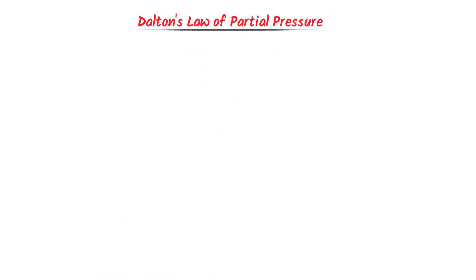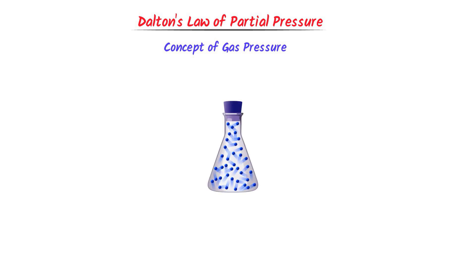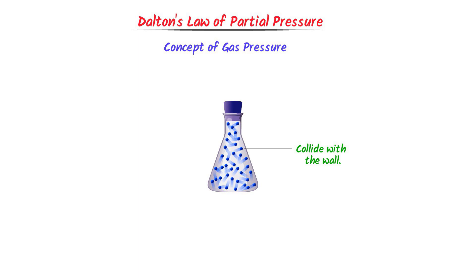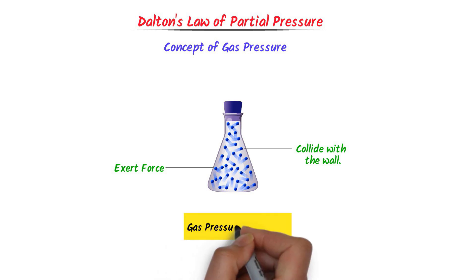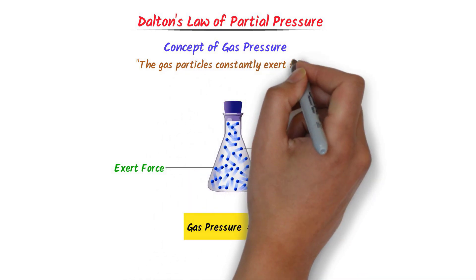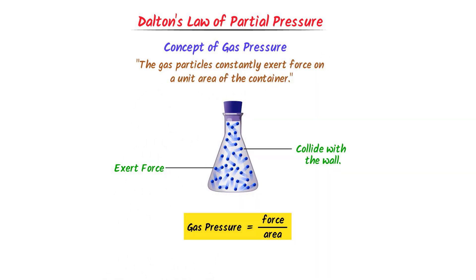Dalton's Law of Partial Pressure. Firstly, let me teach you the concept of gas pressure. Consider gas enclosed in this container. We know that gas molecules constantly collide with the walls of the container. During collision, the molecules exert force on the walls of the container. Gas pressure is equal to force per unit area. Therefore, gas pressure means the particles constantly exert force on a unit area of the container.